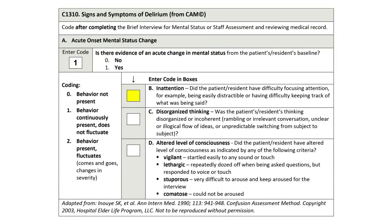What is the correct code for C-1310B – Inattention for Mr. Miller? The options are: 0 – Behavior Not Present; 1 – Behavior Continuously Present, Does Not Fluctuate; 2 – Behavior Present, Fluctuates, comes and goes, changes in severity. The correct code for C-1310B – Inattention would be 2, Behavior Present, Fluctuates. Mr. Miller demonstrated difficulty focusing attention, irrelevant conversation, and difficulty keeping track of what was said. Based on his wife's report, these behaviors are new and represent a change from baseline.